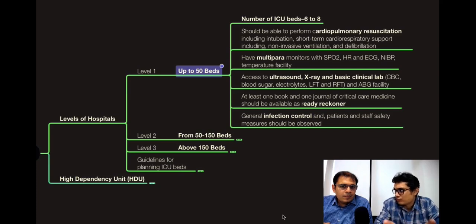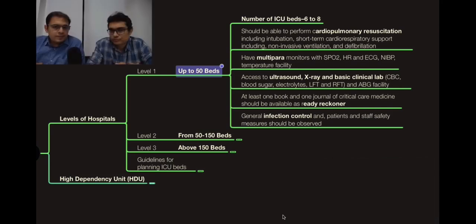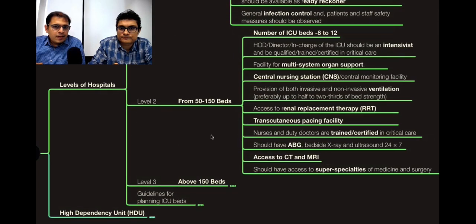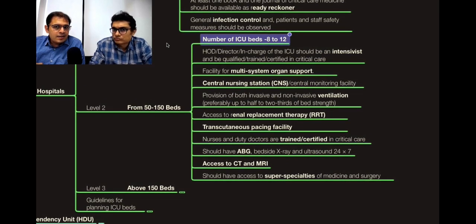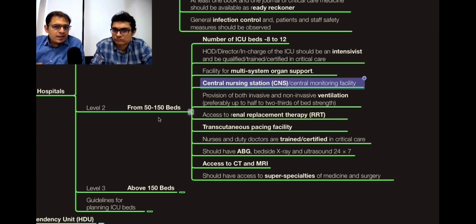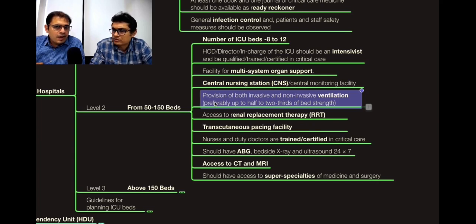Level 2 is from 50 to 100 beds — a somewhat bigger hospital where you can have an ICU of 8 to 12 beds. The ICU in-charge or HoD should be a qualified and certified intensivist in critical care. Multi-system organ support should be available. A central nursing station or central monitoring facility is essential — a 10-bed ICU cannot be managed without it for 24/7 care. Non-invasive and invasive ventilation are both important, with up to two-thirds of beds requiring ventilation.